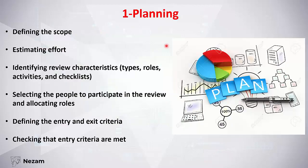In the planning step, we define the scope and estimate the effort of the review. We identify the characteristics of the review — the type, the roles, the activities — and plan for checklists if needed. We select the people that will participate and allocate roles between them. We define our entry and exit criteria and check that our entry criteria is met before moving to the second step.